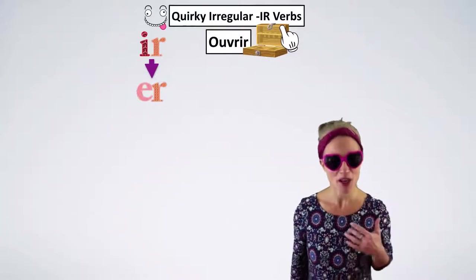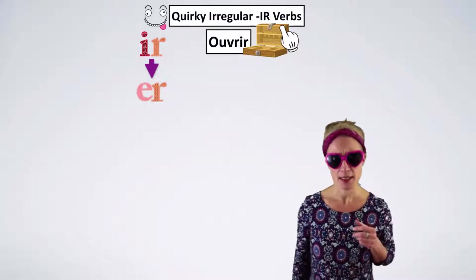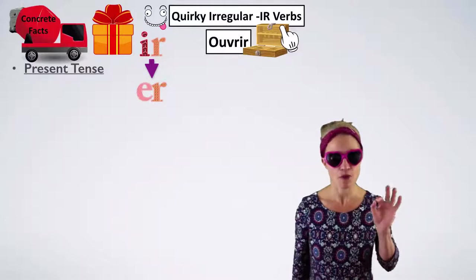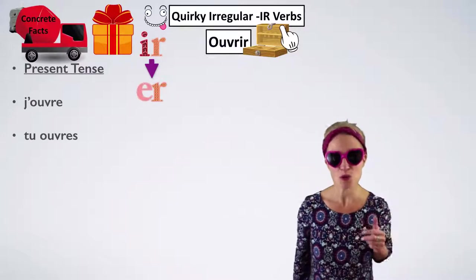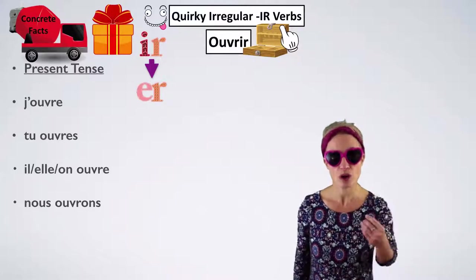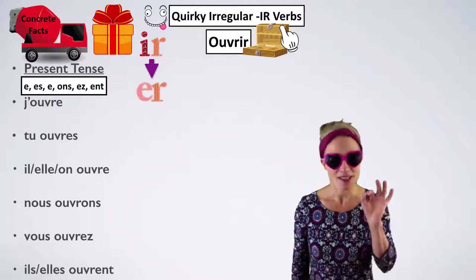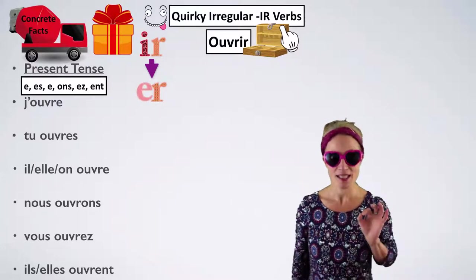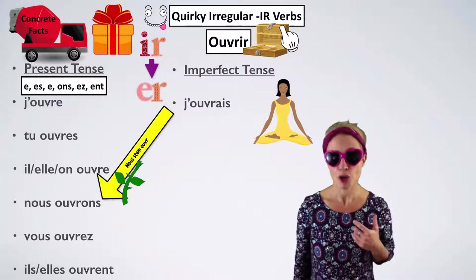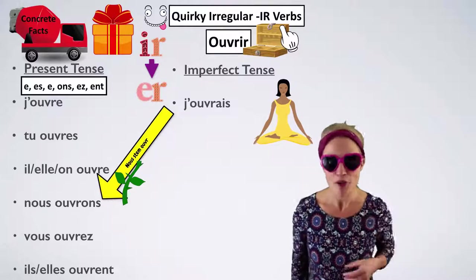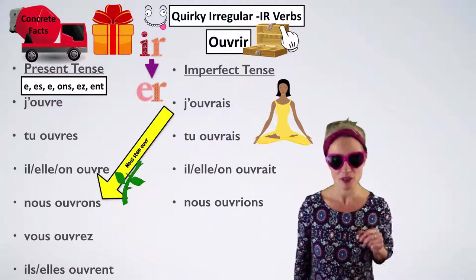Our second group of quirky irregular IR verbs are the ones that are really confused because they don't want to be IR verbs — they want to be ER verbs. An example of this is 'ouvrir' — to open. In the present indicative: j'ouvre, tu ouvres, il/elle/on ouvre, nous ouvrons, vous ouvrez, ils/elles ouvrent — silent E and T. These have the same endings as regular ER verbs: -E, -ES, -E, -ONS, -EZ, -ENT. For the imperfect tense, we need the nous stem — knock off the -ONS — giving us the stem 'ouvr-.' J'ouvrais, tu ouvrais, il/elle/on ouvrait, nous ouvrions, vous ouvriez, ils/elles ouvraient.